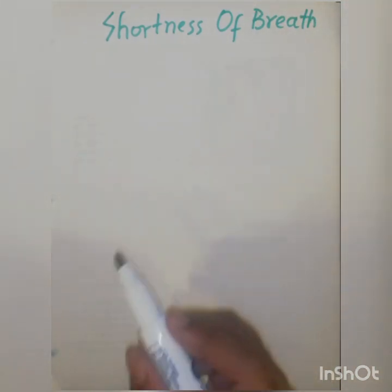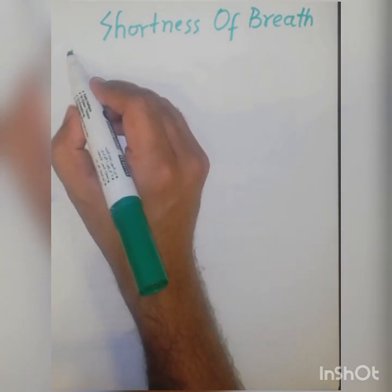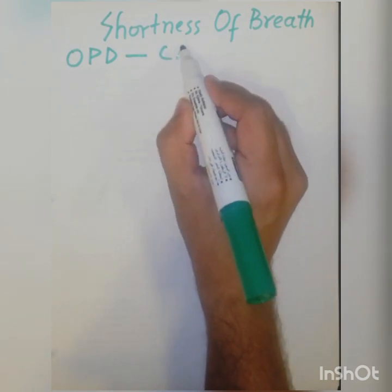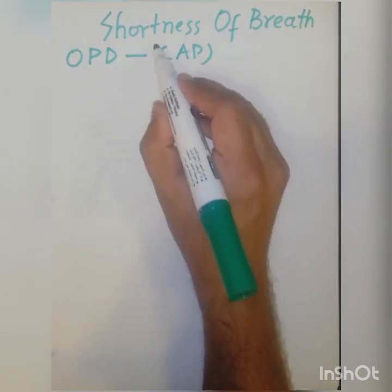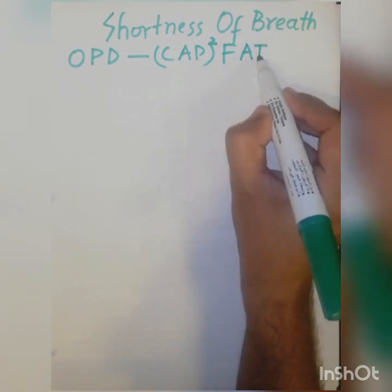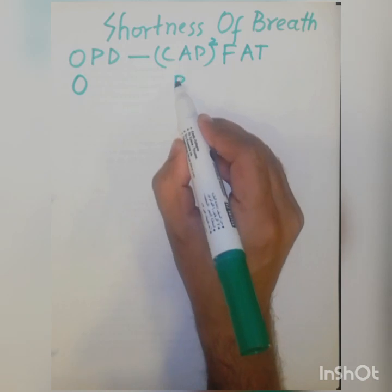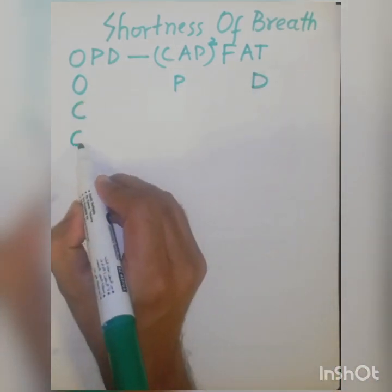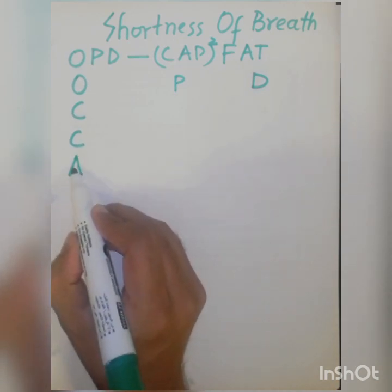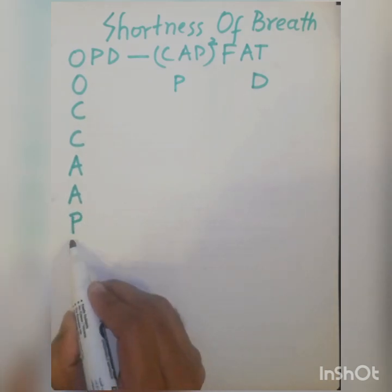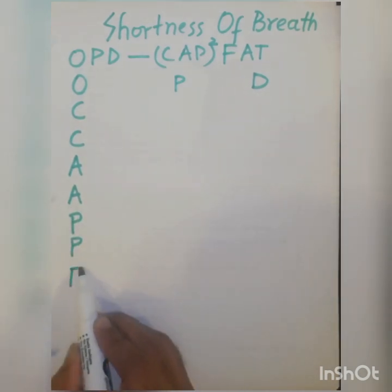How do we approach a case with shortness of breath? First, on the history, we ask OPD and then CAP SQUARE FAT.